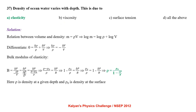Density of ocean water varies with depth. Using M = ρV and bulk modulus B = ΔP/(−ΔV/V) = ΔP/(Δρ/ρ), rearranging: ρ = ρ₀/(1 − ΔP/B). Here ρ is density at a given depth and ρ₀ is density at the surface. So the correct option is A.